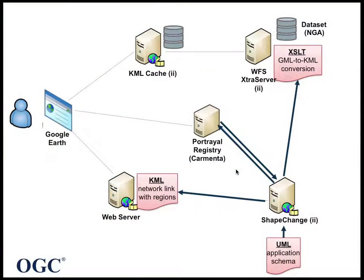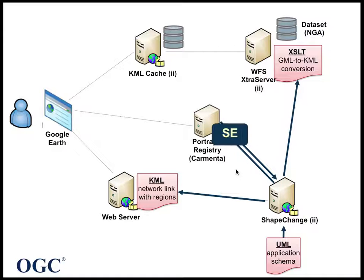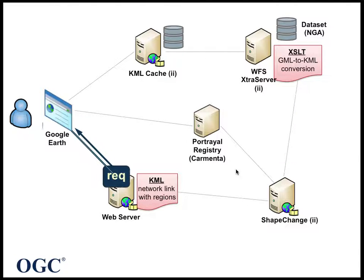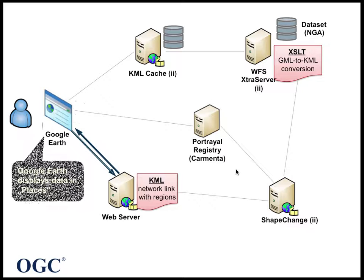Now let's have a look at what's happening behind the scenes. First, our shape change tool creates the resources to publish the topographic dataset features in KML. It reads the application schema, which is provided as a UML model, as well as the associated portrayal rules from the portrayal registry, which is provided by Carmenta. The portrayal rules are represented using OGC Symbology Encoding. The XSLT transformation, used for the transformation from GML to KML, is published to the web feature service that provides the NGA dataset. In addition, a KML network link with regions with HTTP hyperlinks to the KML cache is created and published on a web server.